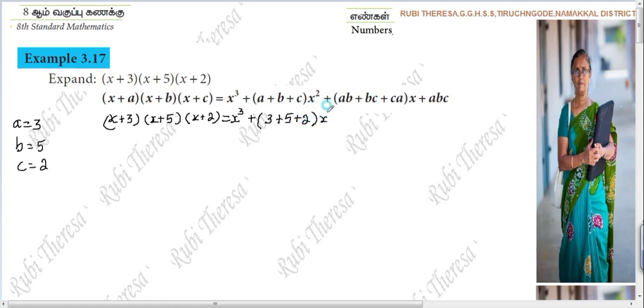Into x square. Plus AB, A into B, that means 3 into 5. Plus, but you don't write like this. Suppose why I am saying is 3 into 5, next is 5, next is 5 into 2. Next, 2 into 3.